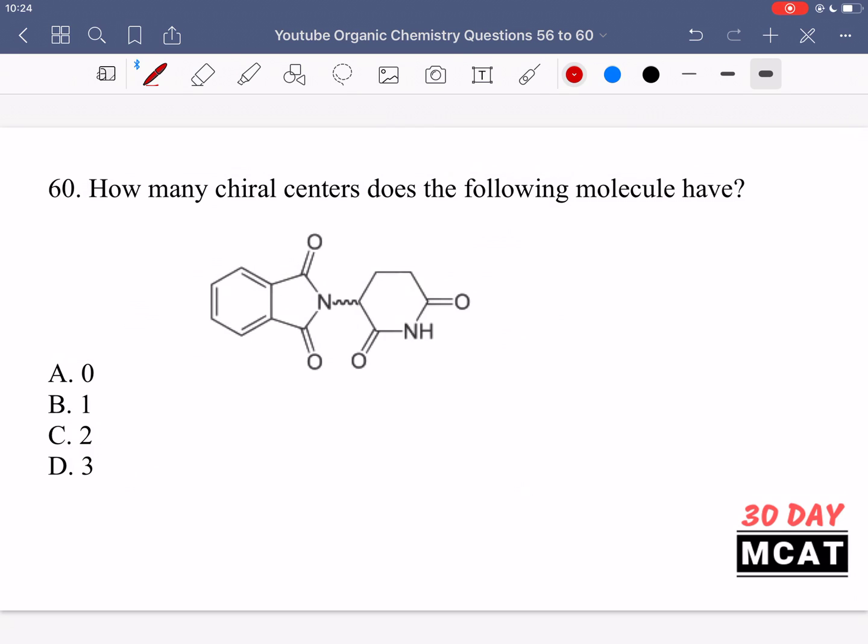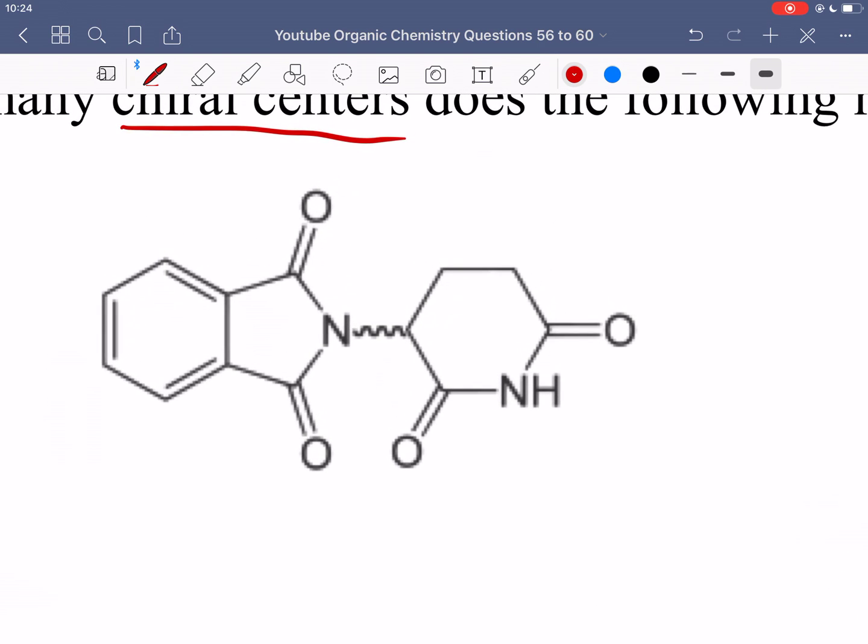In question 60, we're asked how many chiral centers does the following molecule have? So we're looking for chiral centers, and remember a chiral center is a carbon, which should be sp3 hybridized, and then it should have 4 different groups attached. And this structure makes it pretty simple for us to see, because we only see chirality coming from one place, which is this carbon. None of the other carbons are really showing any type of stereochemistry.